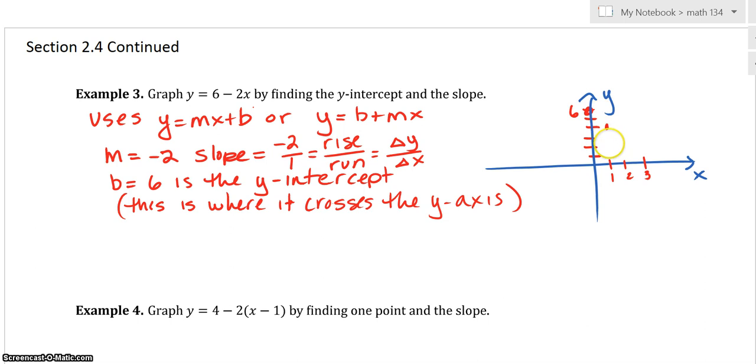So we know we're going to go, again, from this point, I went down 2 and over 1. Got another point. We could even do it again, down 2 and over 1. Kind of gives you the idea of what the line is going to be, a rough sketch without the grid.